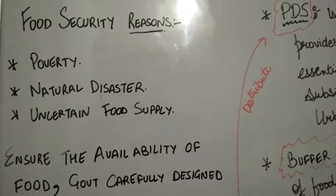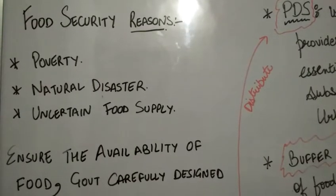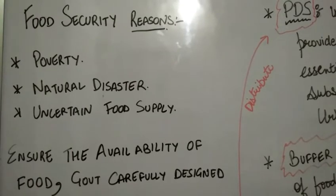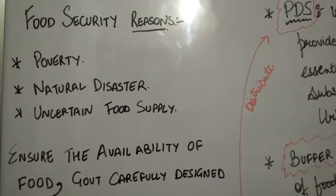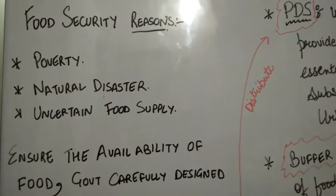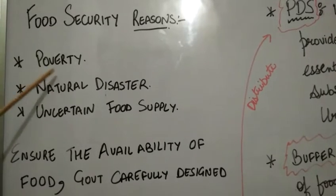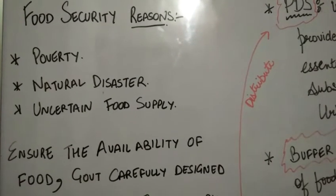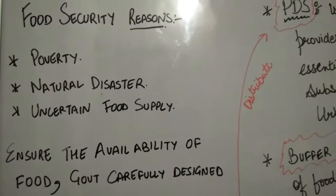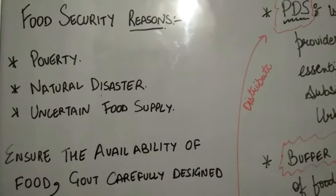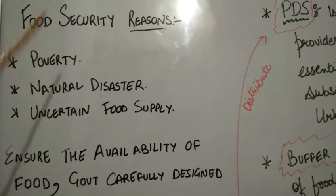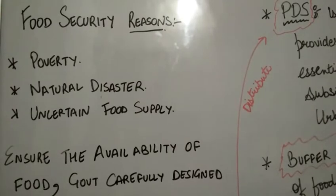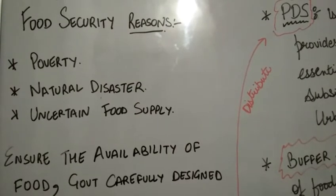When we talk about food security — why do people not get food? There may be several reasons behind it. Either it is poverty — people are poor, they don't have money — or a natural disaster or calamity such as an earthquake or flood hits a whole area, disrupting the required supply of food.